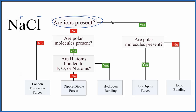We go over here — yes, we have ions. This asks: are there polar molecules present? When we talk about molecules, we're talking about molecular bonds, covalent bonds, and that would take place between two non-metals. Here we have a metal and a non-metal, so that's not the case. We don't have a polar molecule — we don't have a molecule at all.